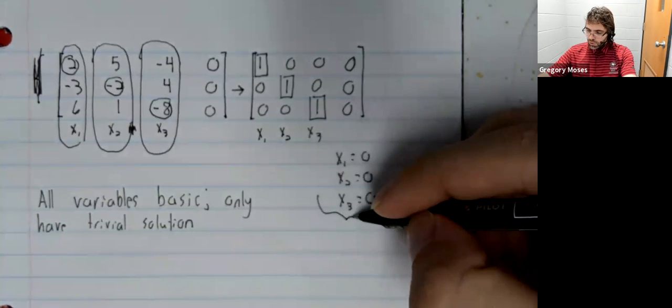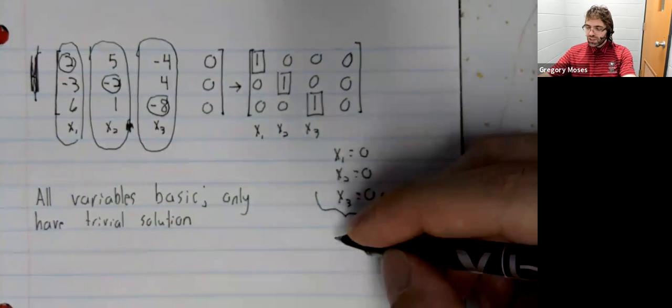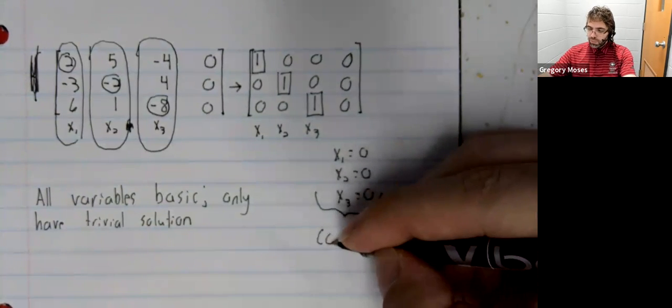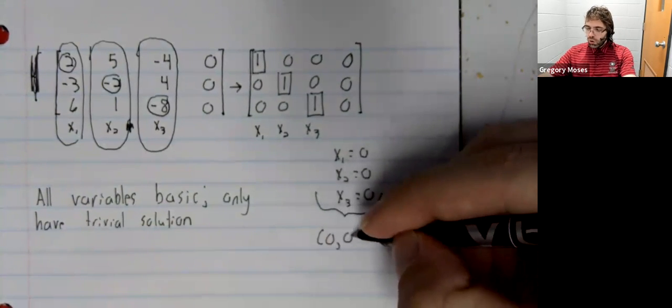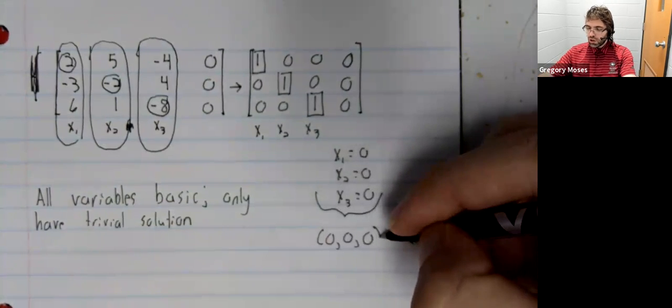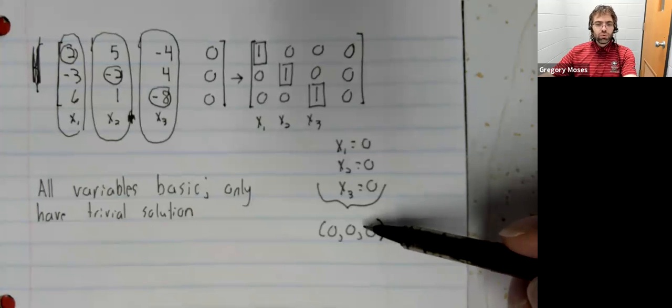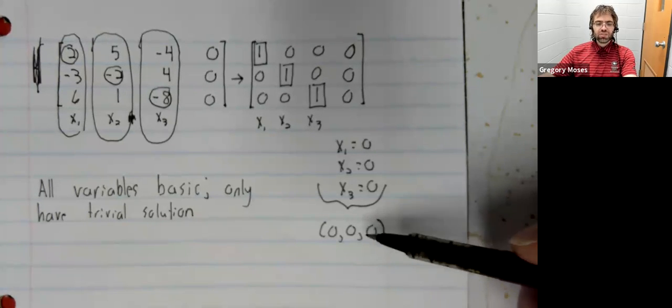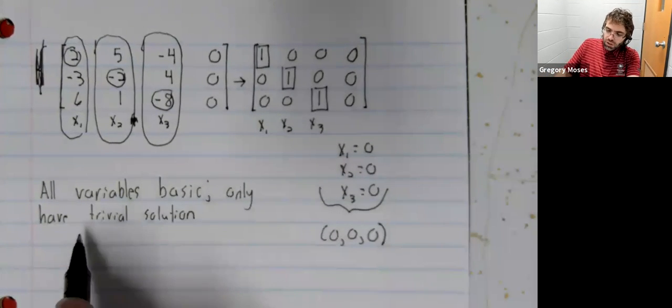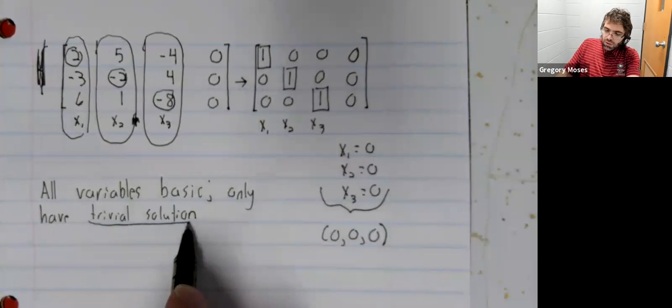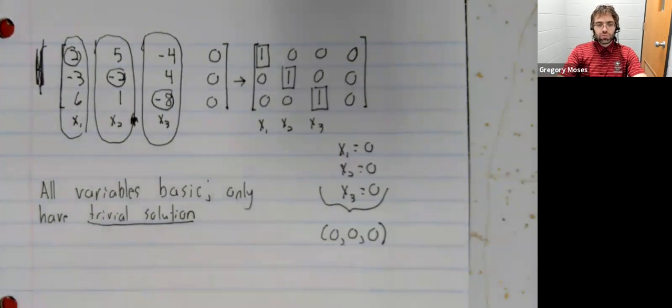x3 equals 0. So rather than cite that theorem, we've solved the system of linear equations. And we've explicitly found that it only has this solution. And this solution, of course, is the trivial solution.